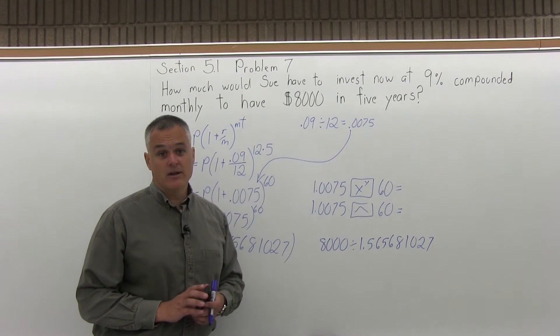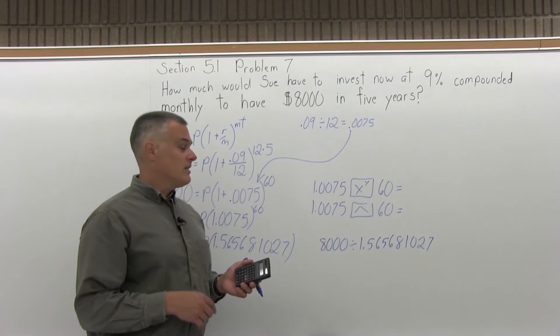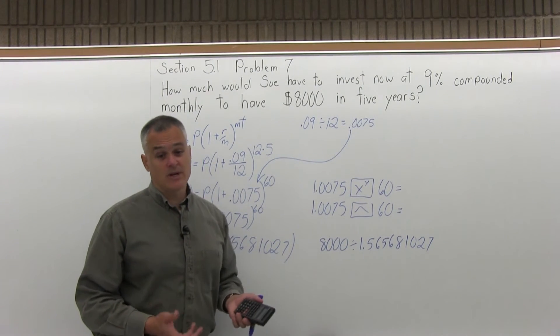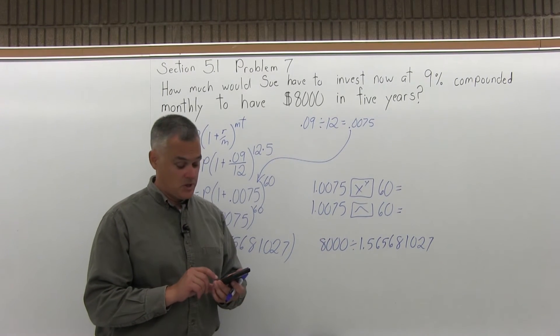But before you clear the calculator, if you're doing it with a calculator, just store it in memory. Then clear it and go 8,000 divided by recall memory, and you don't have to type it all in again. It's not the end of the world if you type it all in again, but if you want to save some time, you can use the memory on your calculator, which is what I'll do.